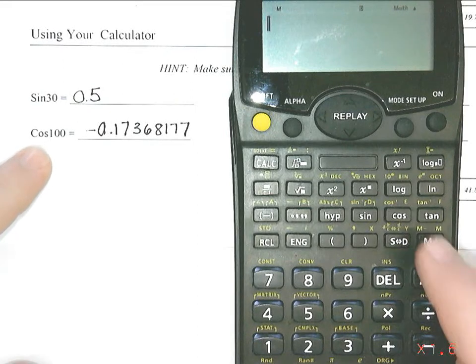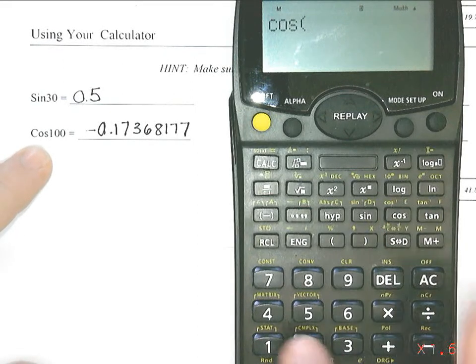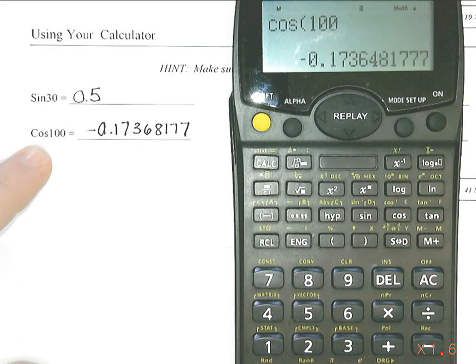If I wanted to try the cosine of 100, I would press cosine, and then type in 100. And it gives me the same answer that I got with the other calculator.